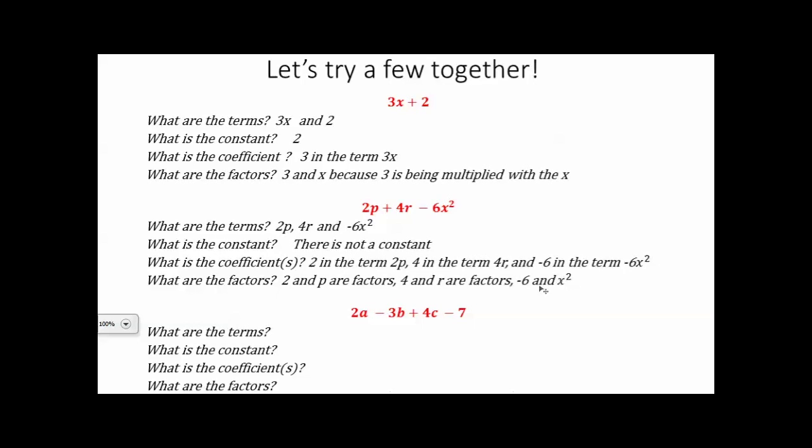Let's take a look at one more. We have 2a minus 3b plus 4c minus 7. Our terms here again are separated by a plus or minus sign, so we have a 2a, we have a negative 3b, we have a 4c, and we have a negative 7. So our terms here are 2a, negative 3b, 4c, and negative 7. A constant is the number being added or subtracted in our expression that does not contain the variable. We have one this time. We have this minus 7. Therefore, our constant here is negative 7.